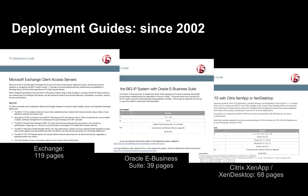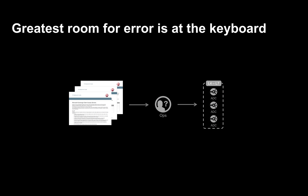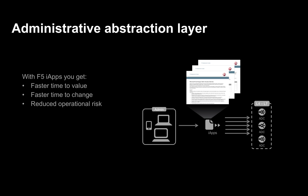The problem is the sheer amount of pages. Exchange has 119 pages; the Citrix XenApp and XenDesktop deployment guide is 68 pages. The issue our customers were having is that a lot of the room for error is at the keyboard when implementing these deployment guides — some of them could take up to a week to enter all those settings. So we came up with iApps: the templatization of those deployment guides, and they've been evolving since 2002.